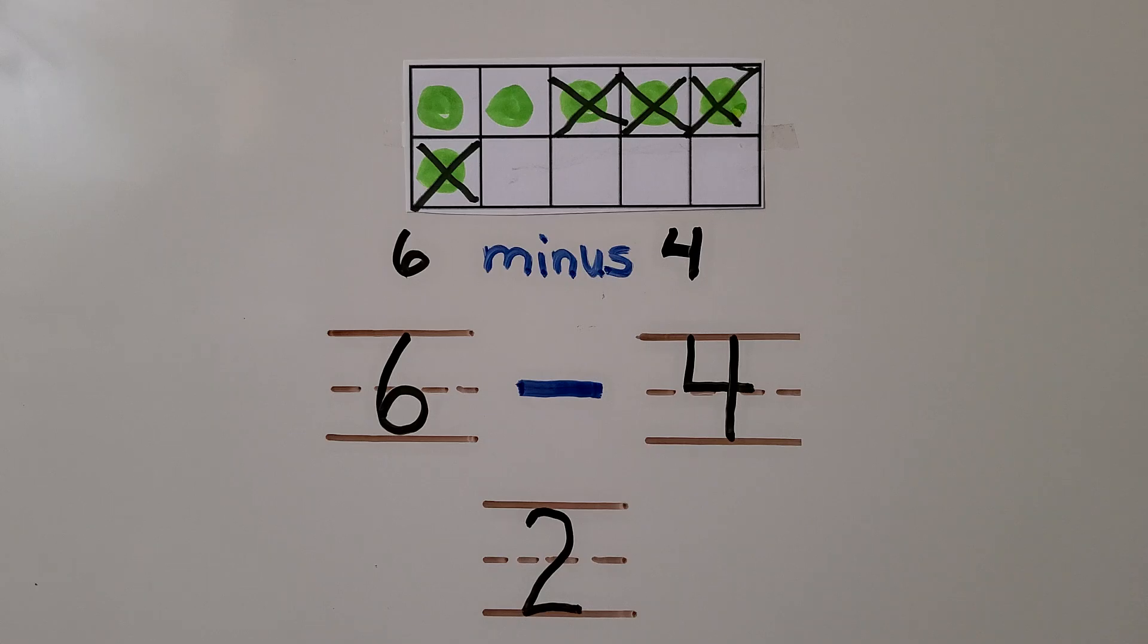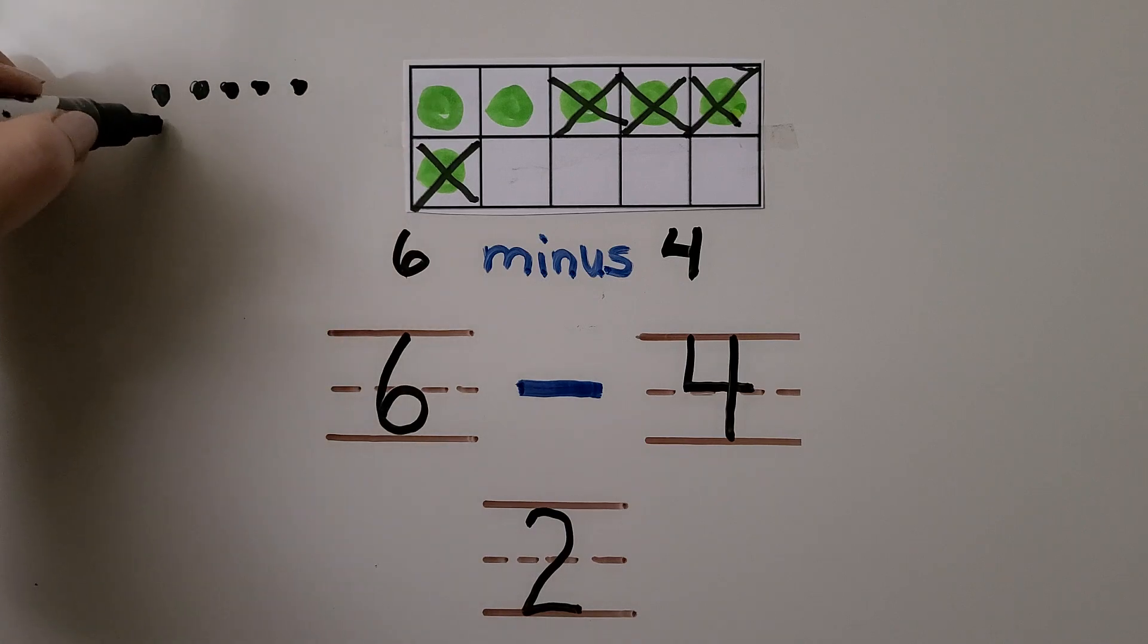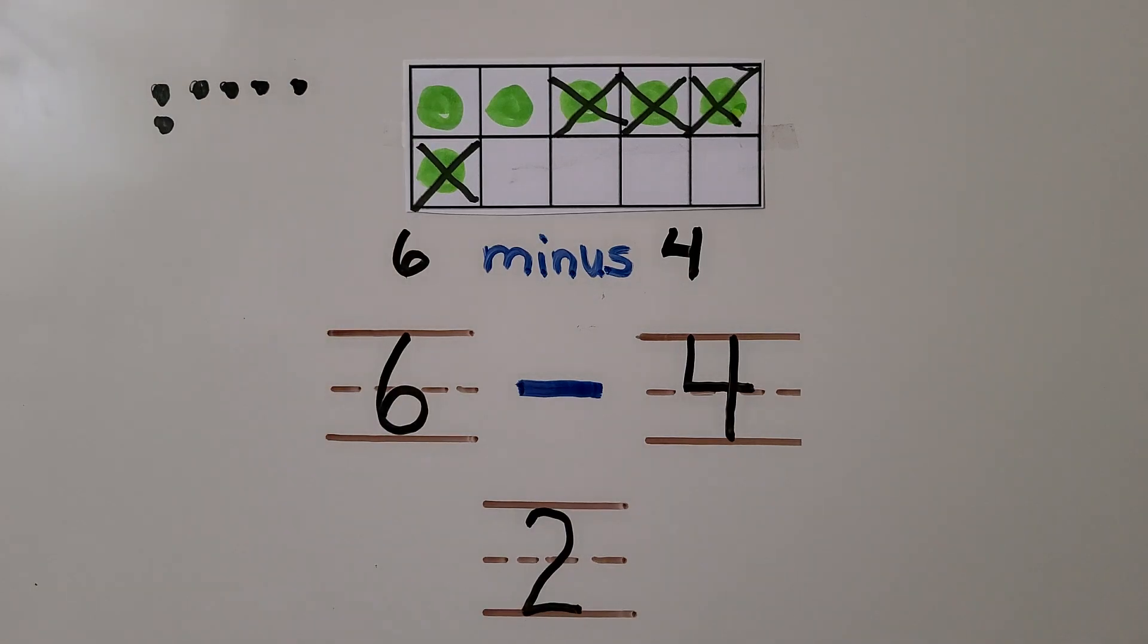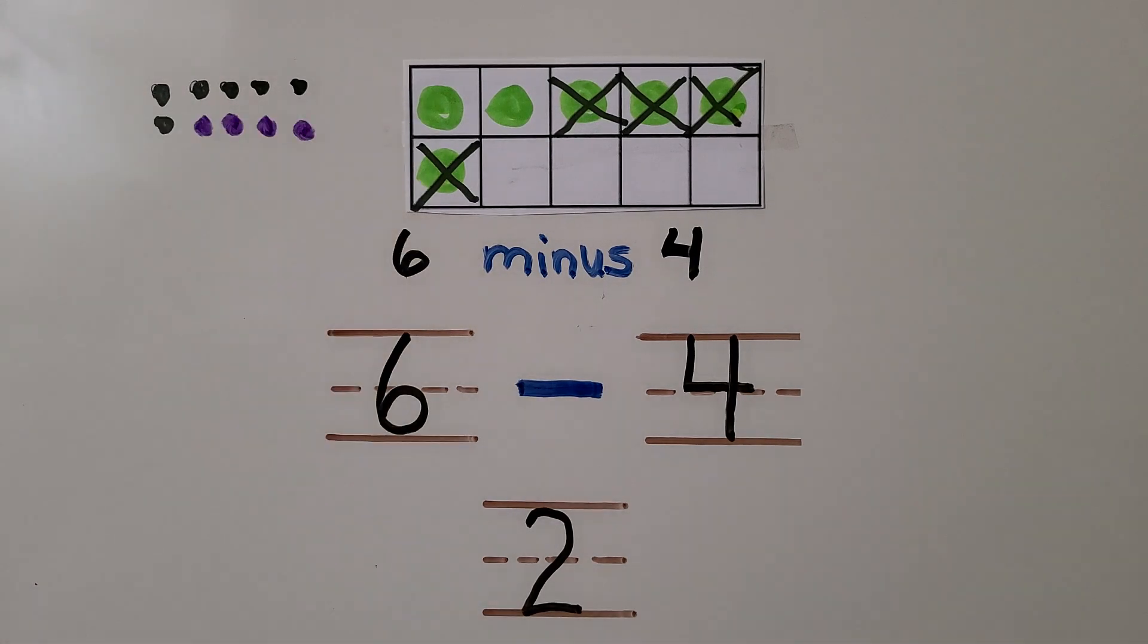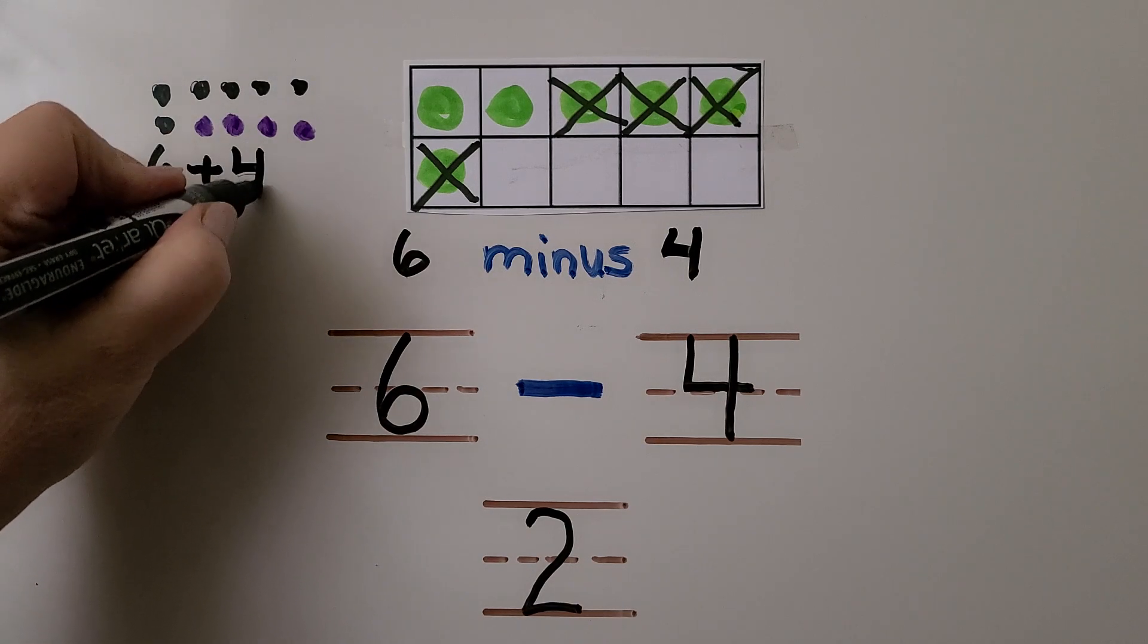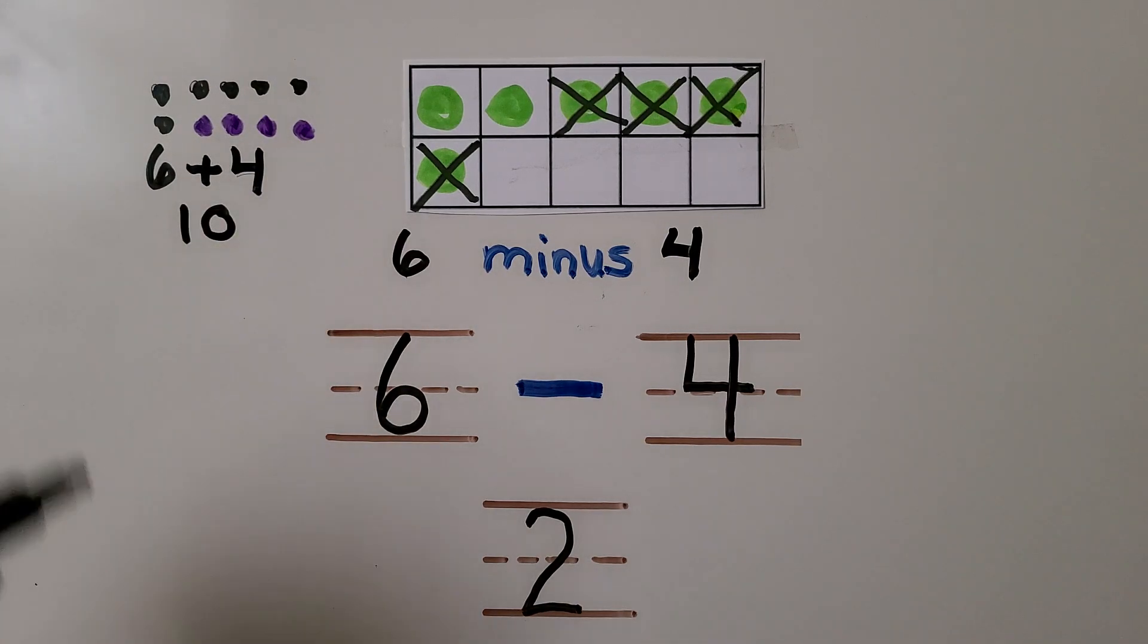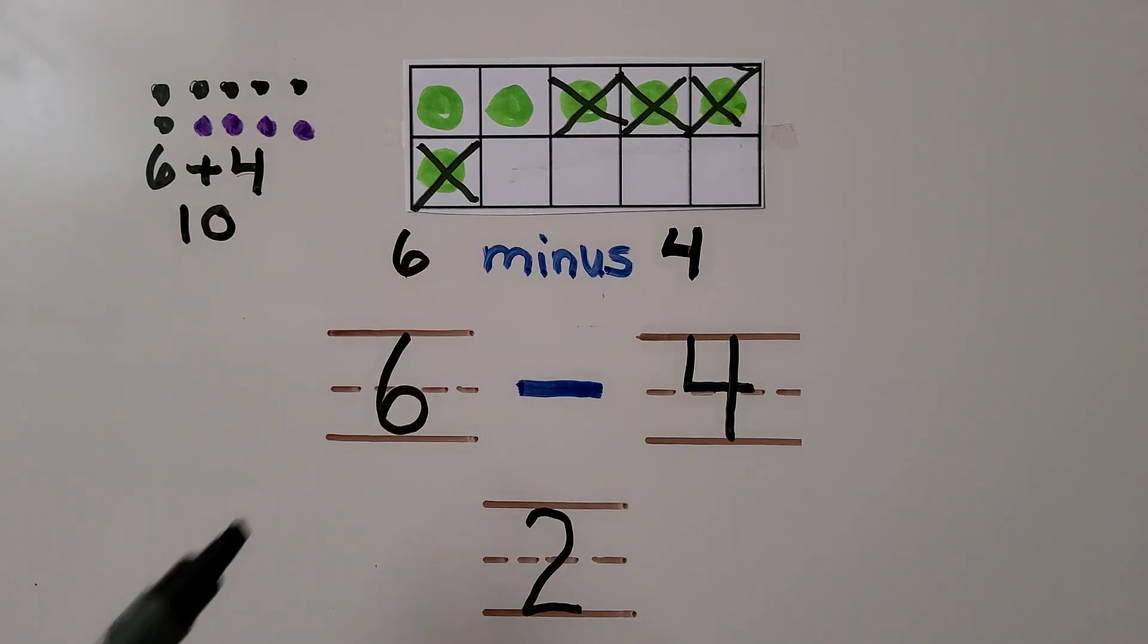Be careful to remember that minus means take away and plus means add. If we see 6 plus 4, we would have 1, 2, 3, 4, 5, 6 plus 4 more: 1, 2, 3, 4. That would be 6 plus 4. We had 6 plus 4 more, that's going to give us 10 counters. This is 6 minus 4. It means we're taking away, we're only going to have 2. It's a big difference between plus and minus.